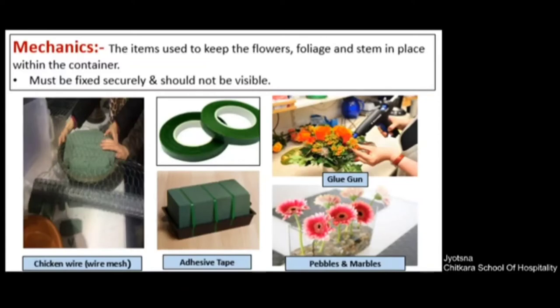Glue gun is used when you are making artificial flower arrangements — to fix or paste leaves and flowers to the stem. Pebbles and marbles can also sometimes be used to fix stems or to place them properly within the container.